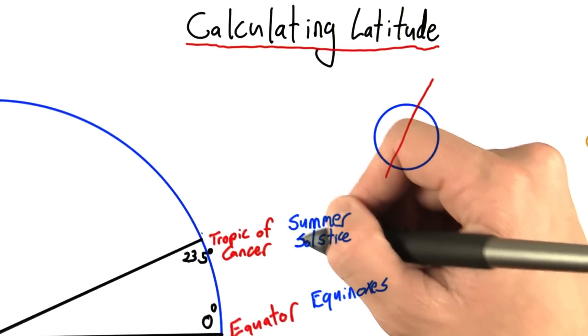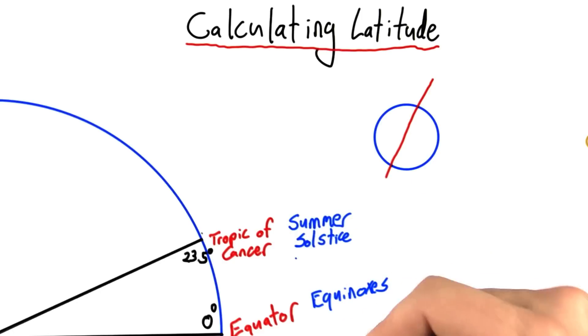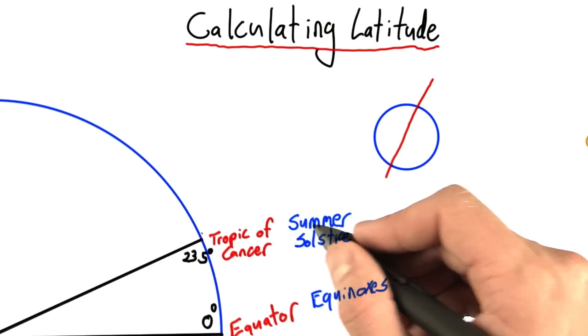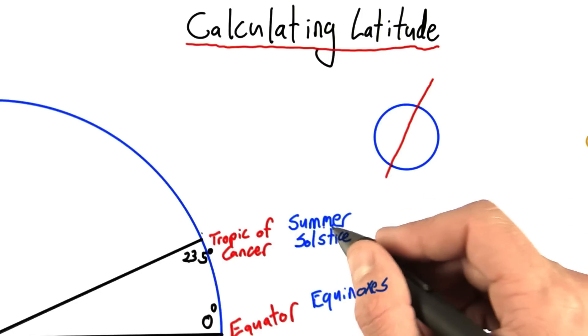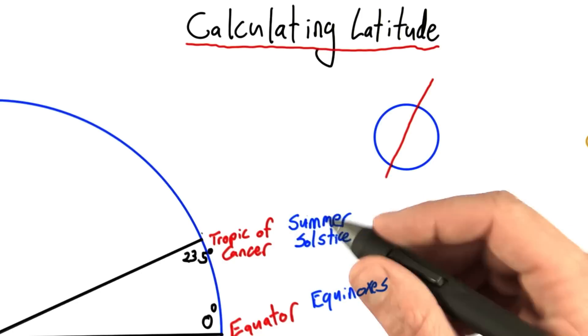I'm using a northern hemisphere bias here. If you're in the southern hemisphere, you probably refer to this as the winter solstice.